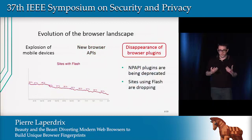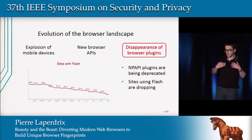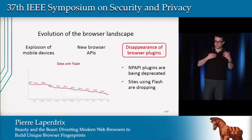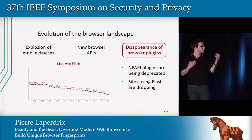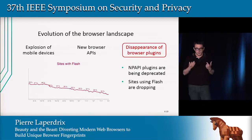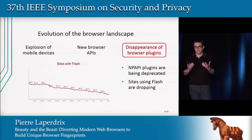Finally, something that is currently going on is the disappearance of browser plugins. The old plugin architecture is being deprecated, and the number of sites using Flash is quickly dropping. Five years ago, approximately 50% of the top million websites had a Flash component; now it's less than 40%. So what is the impact of this disappearance of browser plugins on fingerprinting?